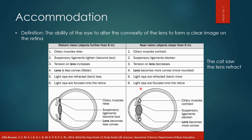For distant vision, it is the opposite. The ciliary muscles relax, the suspensory ligaments tighten, which increases the tension on the lens, and the lens becomes less convex — it becomes flatter. The light rays are refracted less, but they are still focused onto the retina because whether it's distant or near vision, the light rays must always be focused onto the retina so an image can be formed.